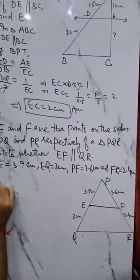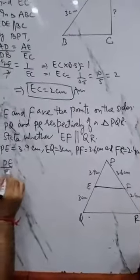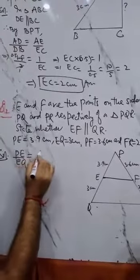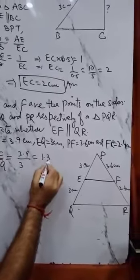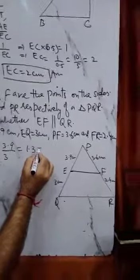PE upon EQ, the ratio is 3.9 upon 3, which is 1.3, which we can write as 13 upon 10.